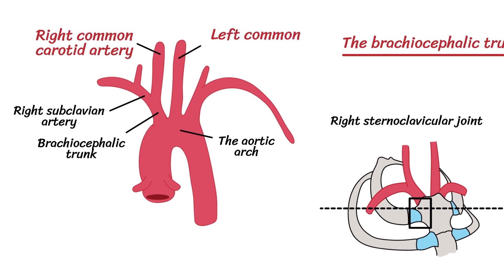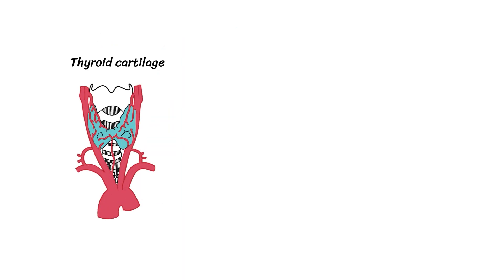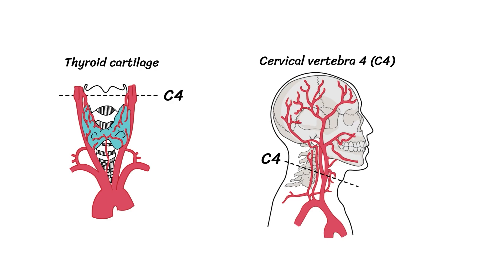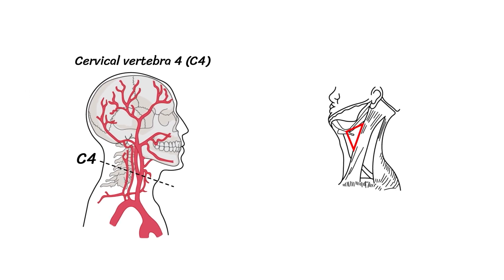The left common carotid artery branches directly from the arch of the aorta. Both the left and right common carotid arteries travel up the neck. At roughly the level of the thyroid cartilage and cervical vertebrae 4 or C4, the carotid artery splits into the external and internal branches. This bifurcation happens in an anatomical area called the carotid triangle.